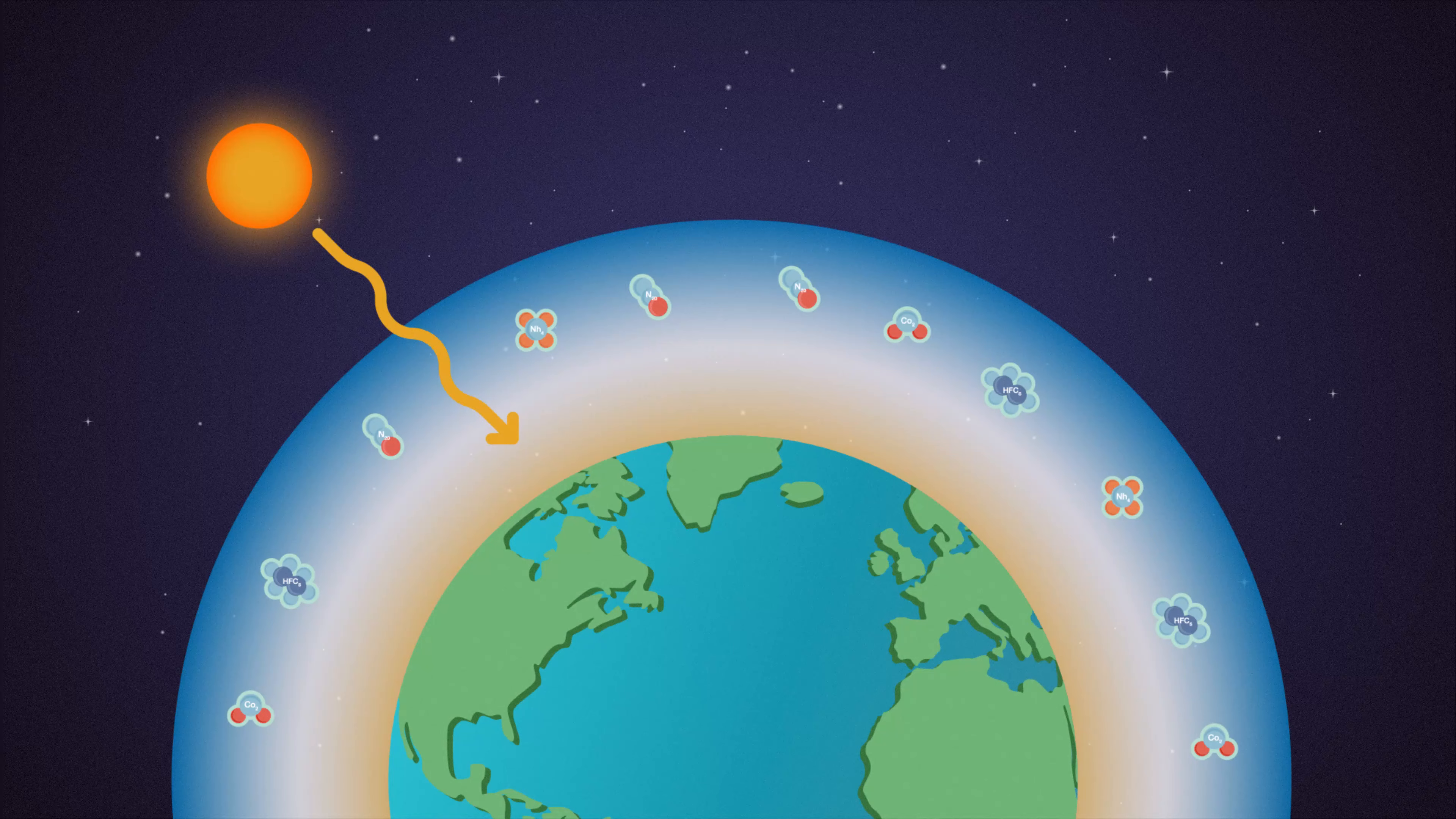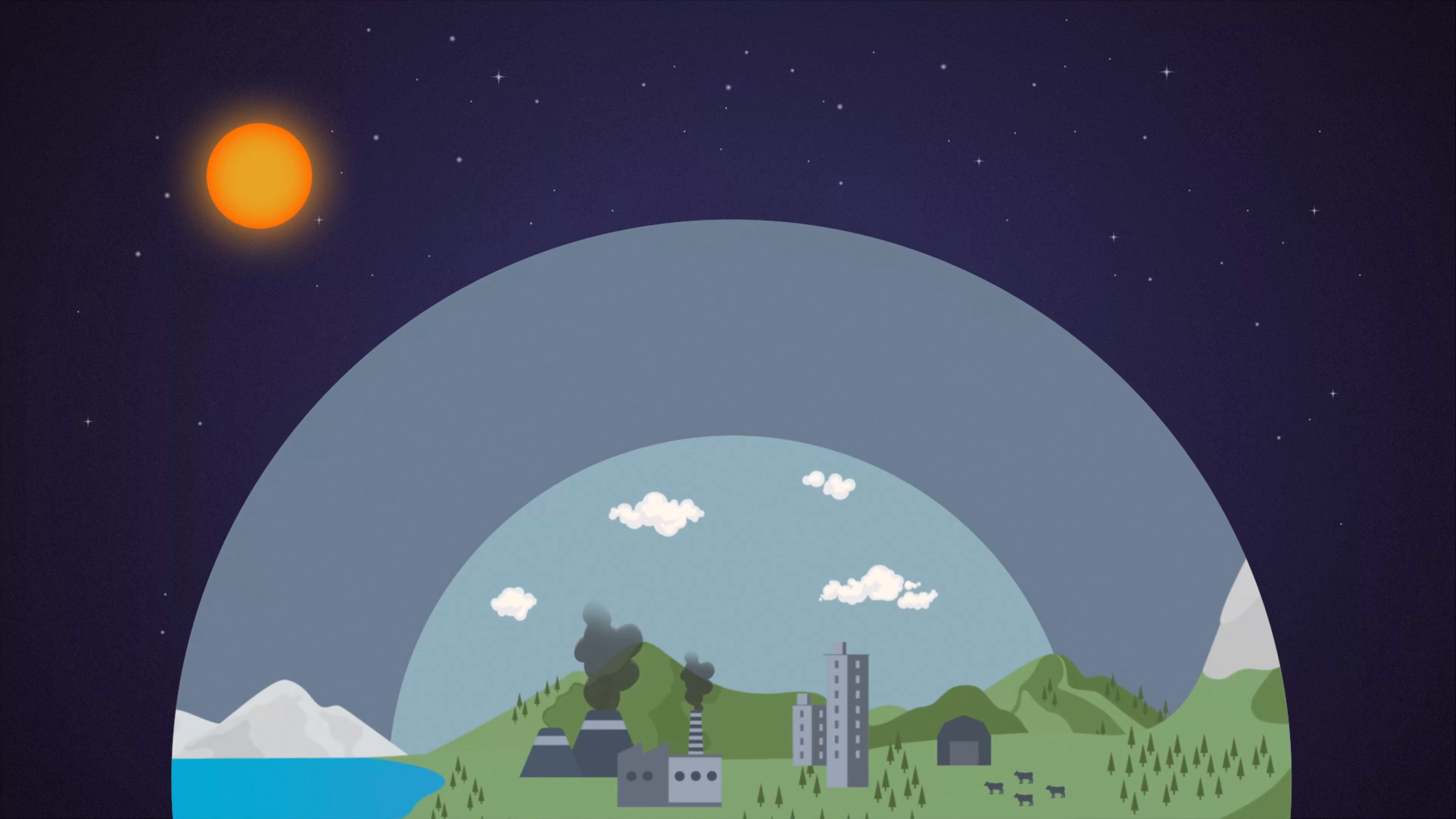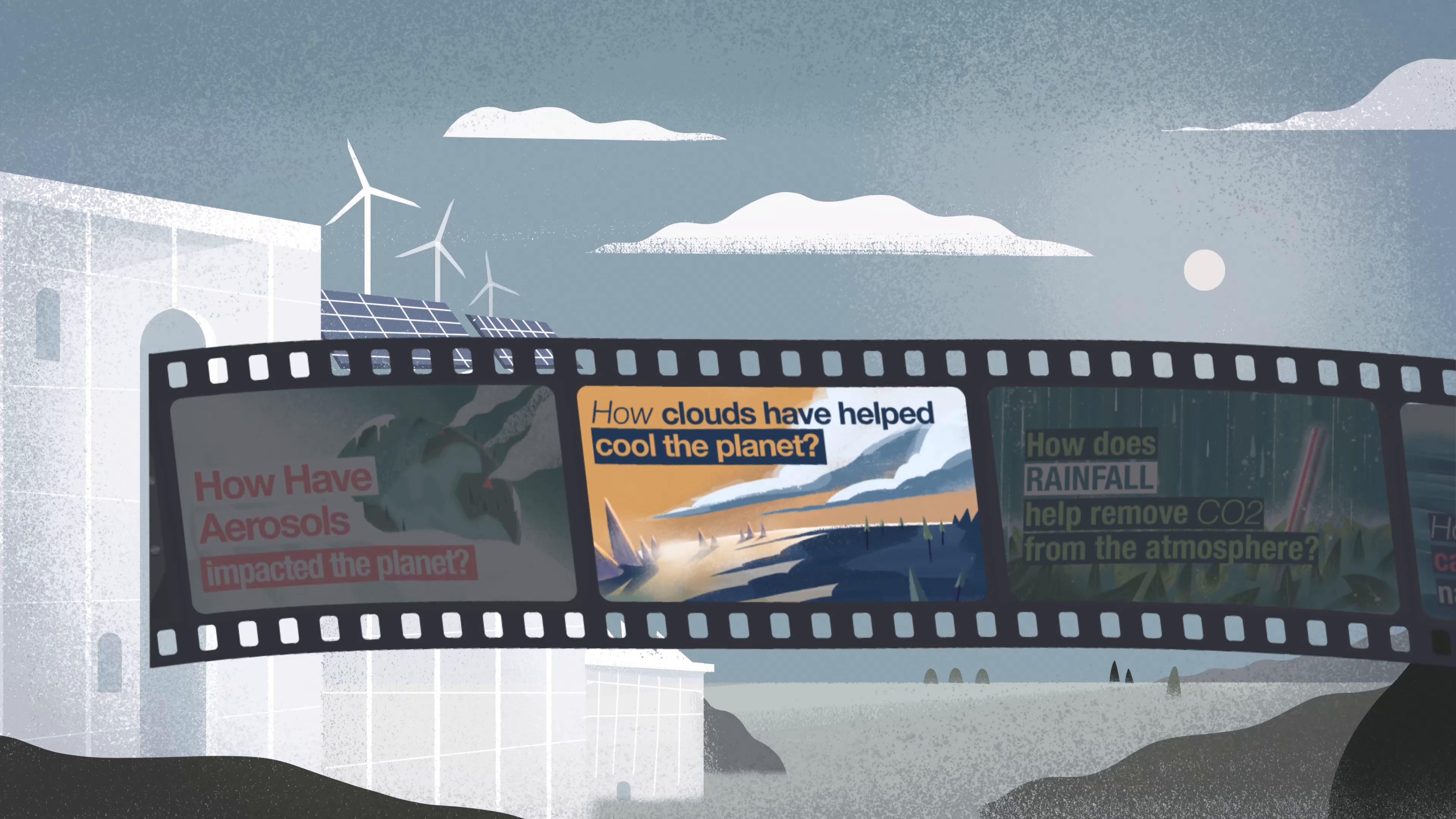So while solar radiation, greenhouse gases, and aerosols are the initial drivers in our climate system, there are also processes that can amplify or diminish these influences. One of those processes is clouds. In the next video, we'll give you a quick recap of how clouds are formed, the different types, and their effect on the climate.